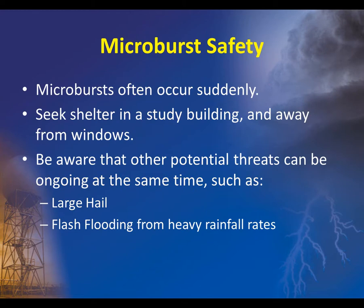When it comes to safety from microbursts, you want to treat microbursts similarly to other damaging wind events — that is, to seek shelter in a sturdy building and away from windows. Severe microbursts have been known to cause minor roof and property damage, as well as uproot trees. Microbursts often occur suddenly, so if a microburst is developing, it is important to act quickly. Be aware that other potential threats may coincide with microbursts, such as large hail and flash flooding.